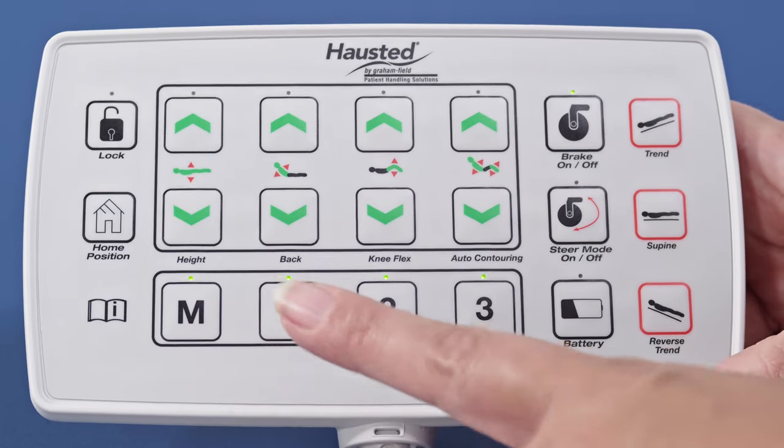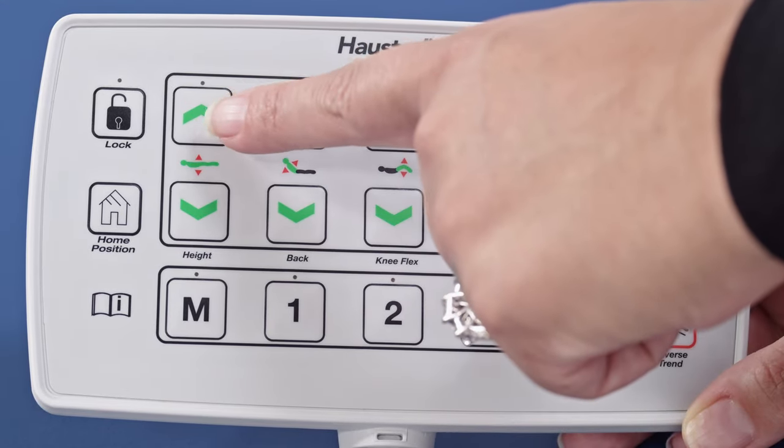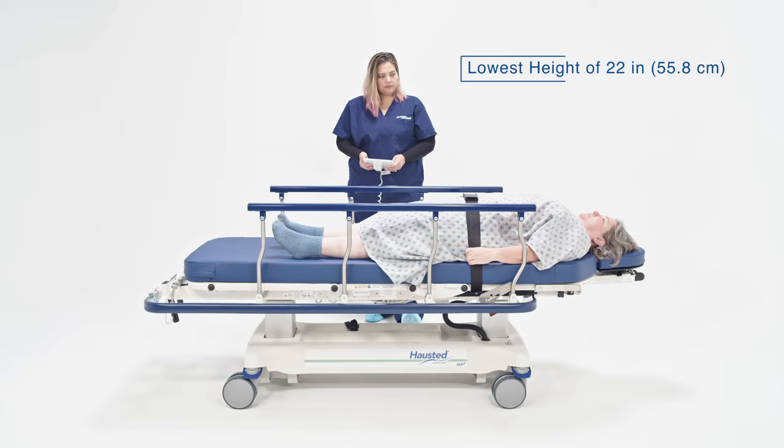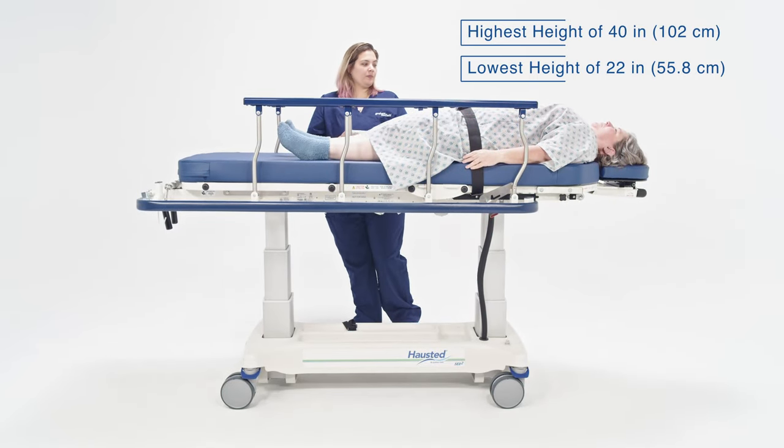To reduce positioning time, the pendant comes with three memory presets. The height can be adjusted from a low of 22 inches, or 55.8 centimeters, to a high of 40 inches, or 102 centimeters.